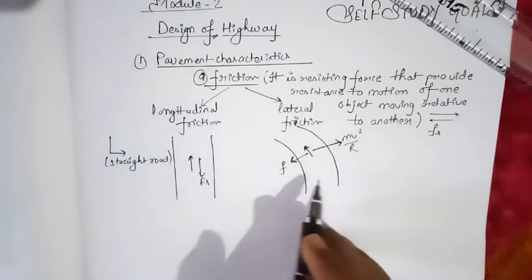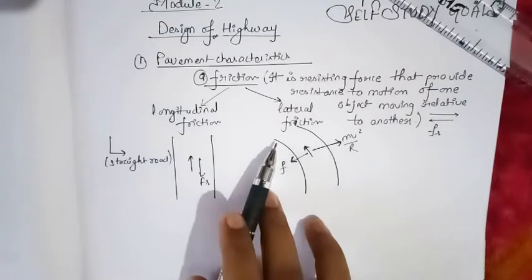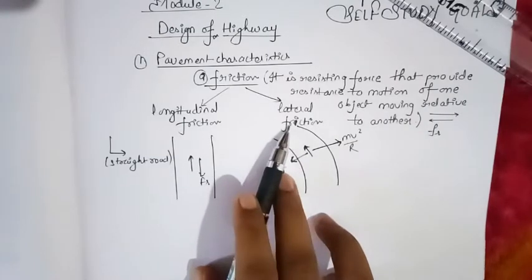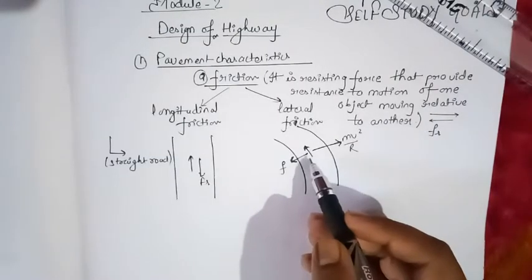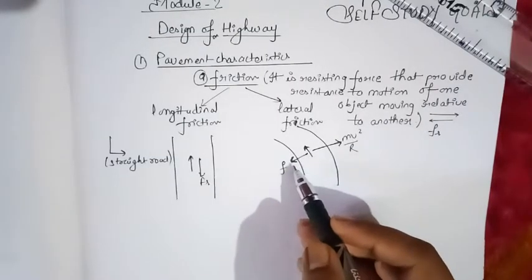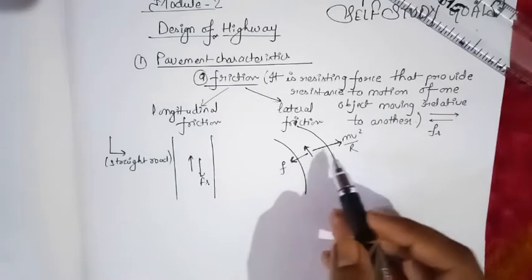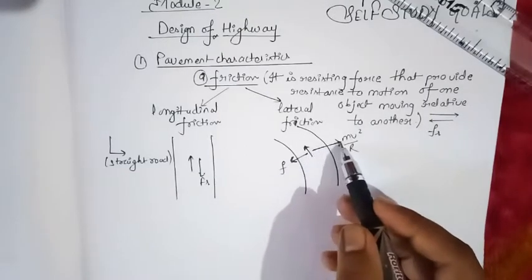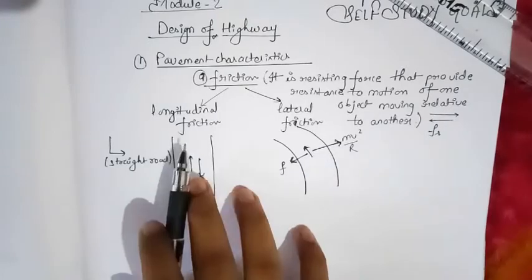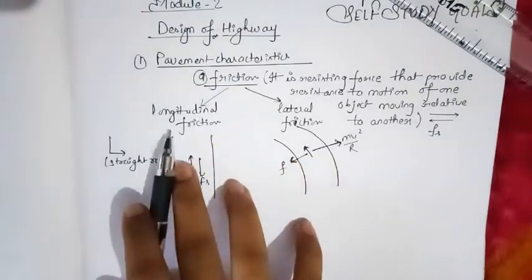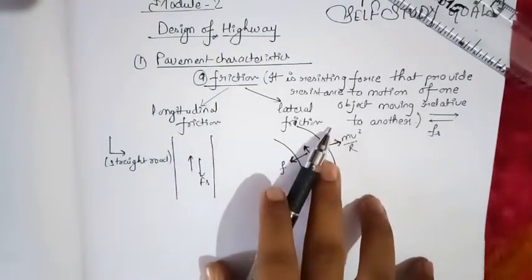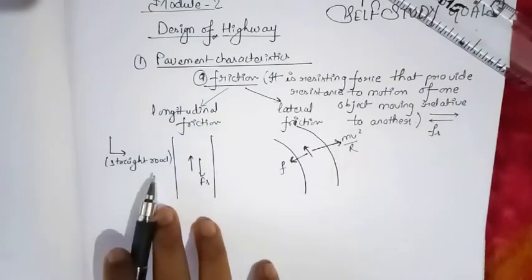When the vehicle is moving on a curve, lateral friction plays a role. Lateral friction acts in the inward direction of the curve, and the centrifugal force acts opposite to the direction of friction. These are the two types of friction: longitudinal friction and lateral friction.